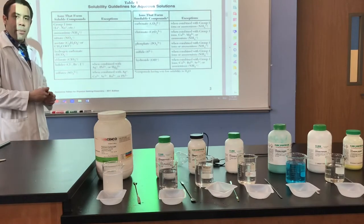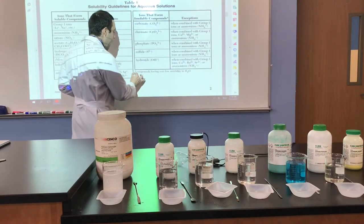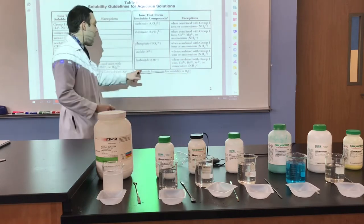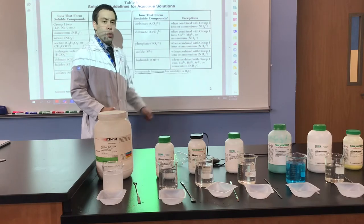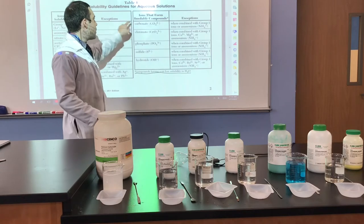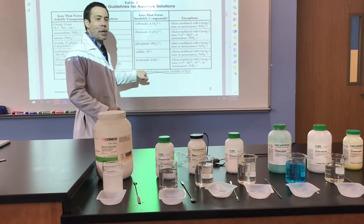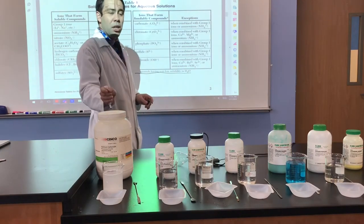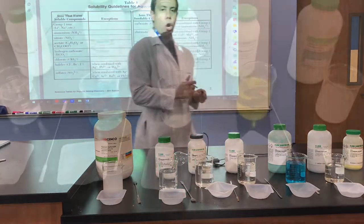When we look at Table F on page 2 of the chemistry reference table, we notice there is an asterisk on the bottom. It says compounds having very low solubility in H2O. So while it says soluble with exceptions and insoluble, it just means that it has very low solubility. That's why we saw the calcium carbonate light up a little bit, and the calcium sulfate light up a little bit more.